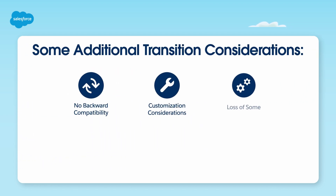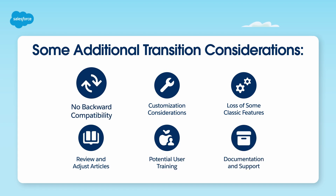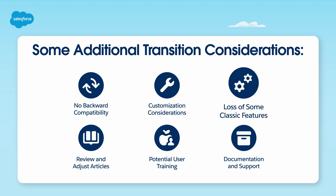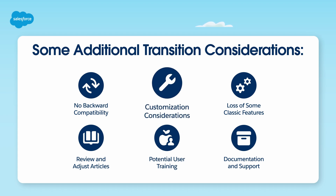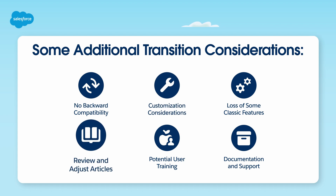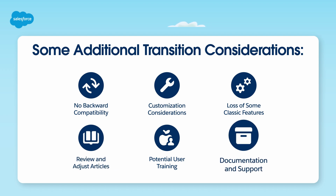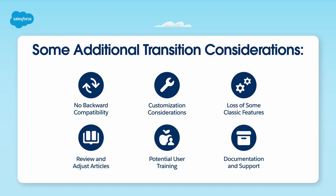Here are some additional considerations as you transition from Salesforce classic knowledge to lightning knowledge. There is no backward compatibility — once lightning knowledge is enabled, you cannot switch back to classic knowledge. There may be loss of some classic features, as certain classic knowledge features may not be available or function differently. Users may need training to adapt to the new interface. Some customizations in classic knowledge may not transfer seamlessly. Existing articles may need review and adjustment to fit the lightning knowledge format. Ensure your team is aware of the limitations and consult Salesforce documentation and support for guidance during the transition.